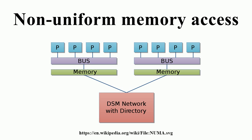But the dramatic increase in size of operating systems and applications has generally overwhelmed these cache processing improvements. Multiprocessor systems without NUMA make the problem considerably worse — a system can starve several processors at the same time, notably because only one processor can access the computer's memory at a time. NUMA attempts to address this problem by providing separate memory for each processor, avoiding the performance hit when several processors attempt to address the same memory.